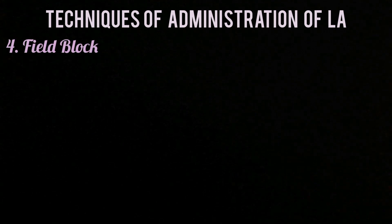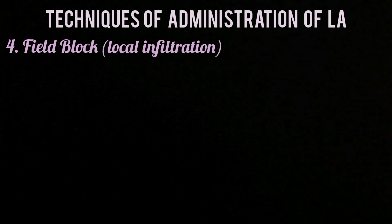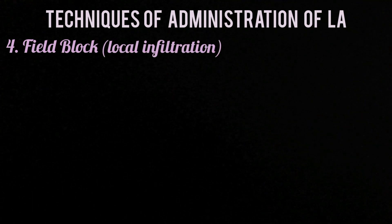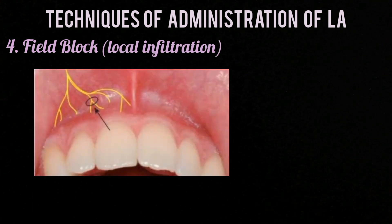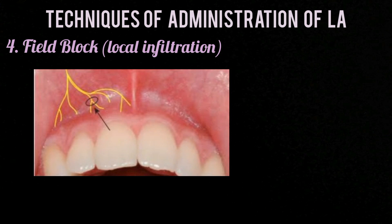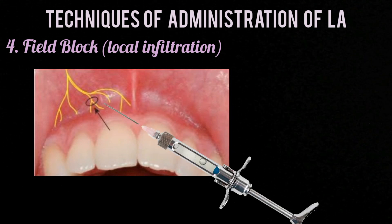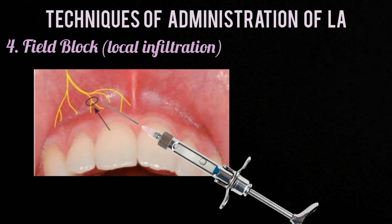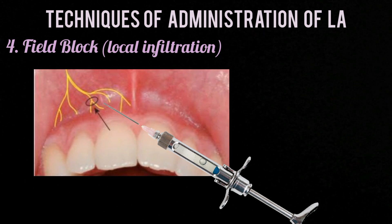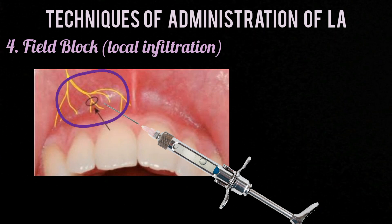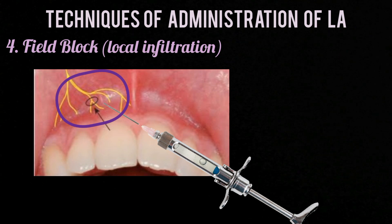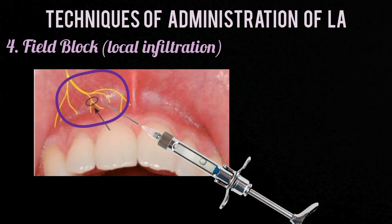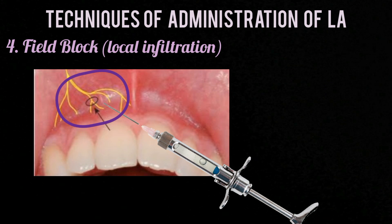Next is field block, also referred to as local infiltration. Since small terminal nerves cannot be anesthetized individually, a field block anesthetizes them all together or en masse. This is done by injecting local anesthetic around the boundaries of the area to be anesthetized, with no attempt to locate specific nerves.